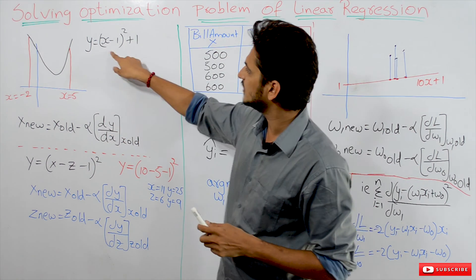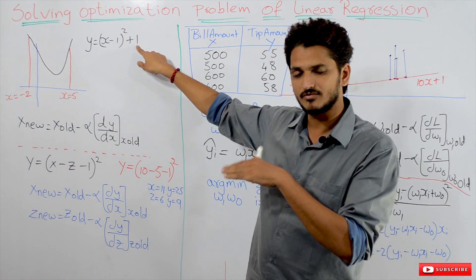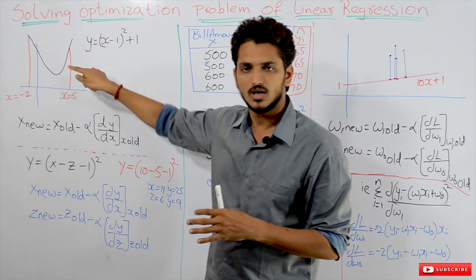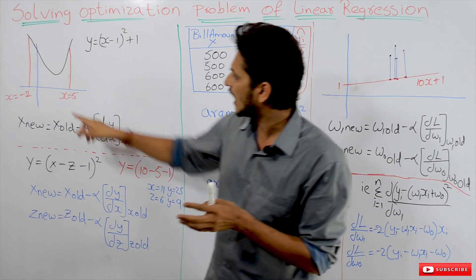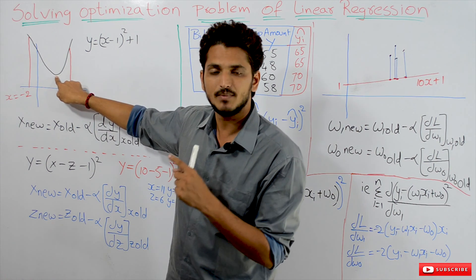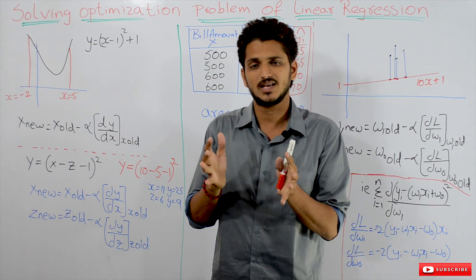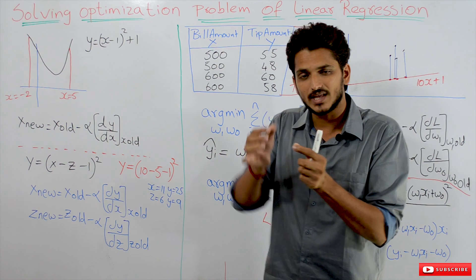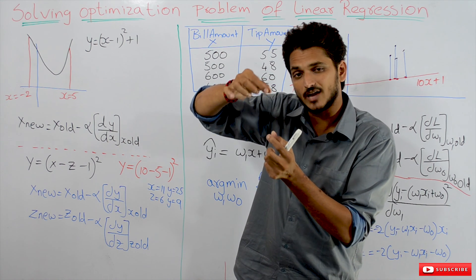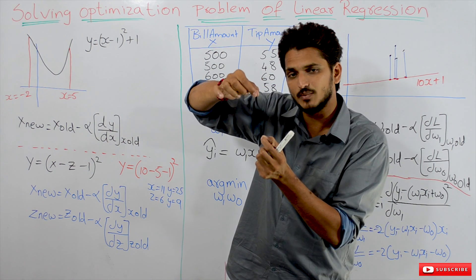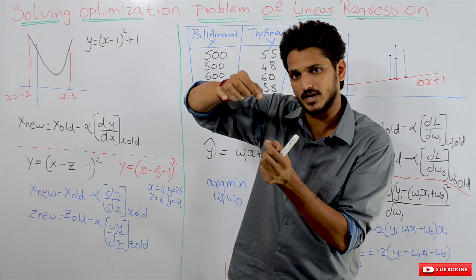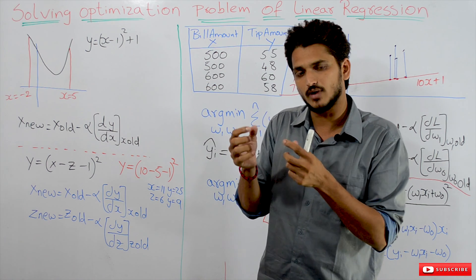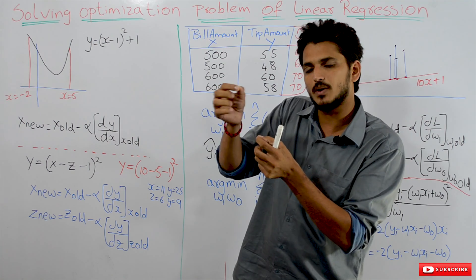Let's take y is equal to (x minus 1) whole square plus 1. This is the function and it looks like a parabola. What's the goal of gradient descent? Identify the minimum point — at what value of x are we having minimum y? This is what we have to identify: the x value at which y is minimum.